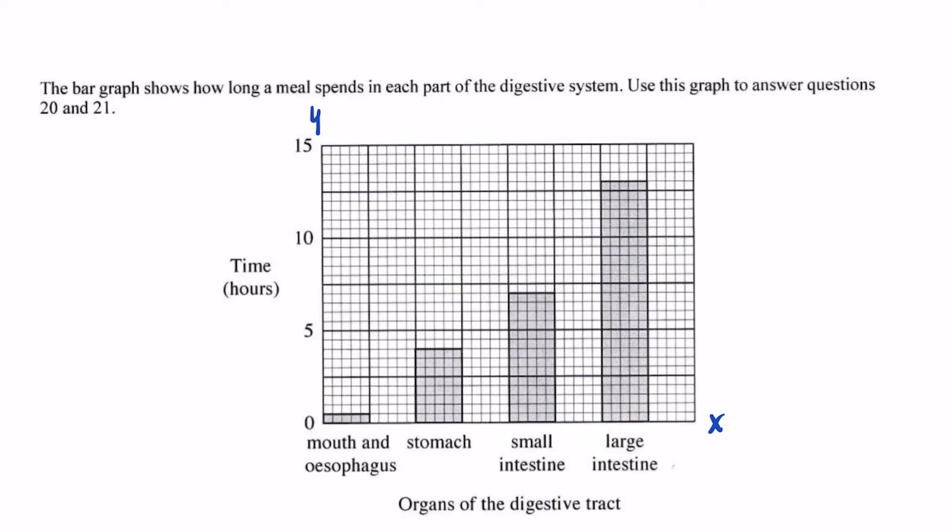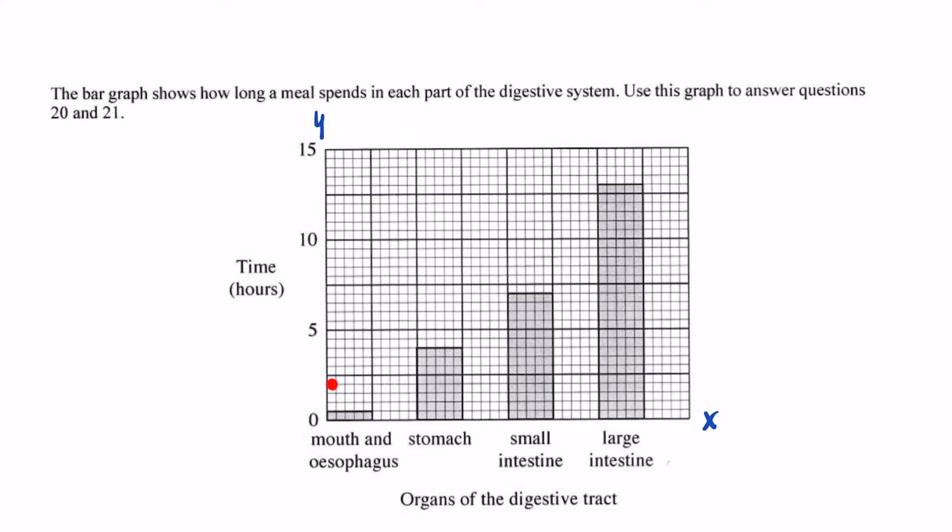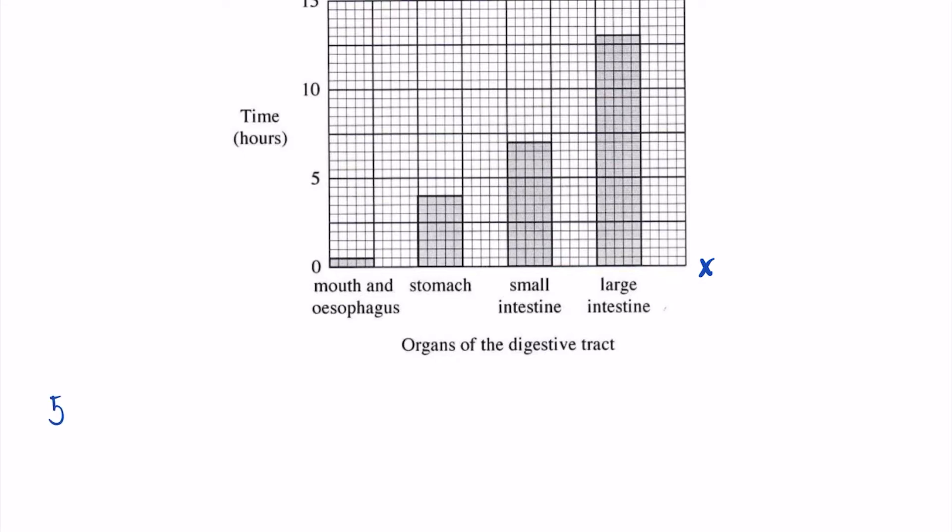So let's count the spaces that we have. We have here one, two, three, four, five, six, seven, eight, nine, 10 spaces between zero and five hours. So we're now going to convert five hours into minutes and then divide the minutes by the 10 units.